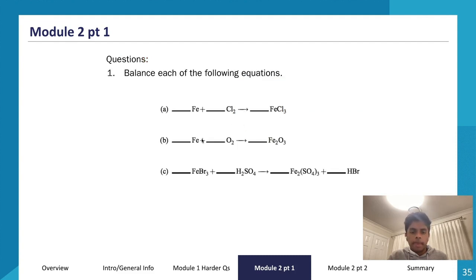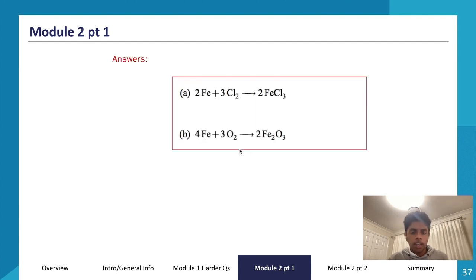For part b: Fe + O2 → Fe2O3. Iron has 1 on the left and 2 on the right; oxygen has 2 on the left and 3 on the right. The common multiple for oxygens is 6, so I put a 2 in front of Fe2O3 and a 3 in front of O2. That gives 4 irons on the right, so I put a 4 in front of Fe. Balanced equation: 4Fe + 3O2 → 2Fe2O3, giving 4 irons and 6 oxygens on each side.